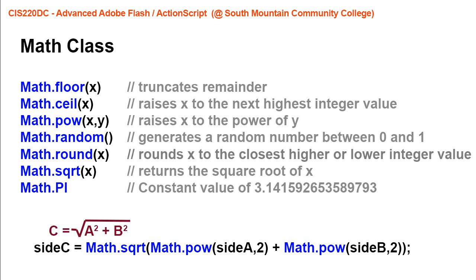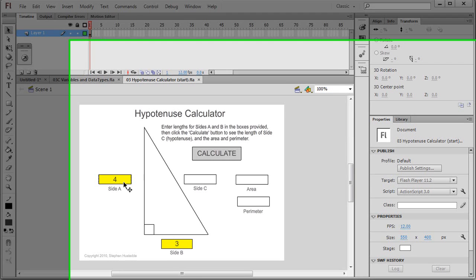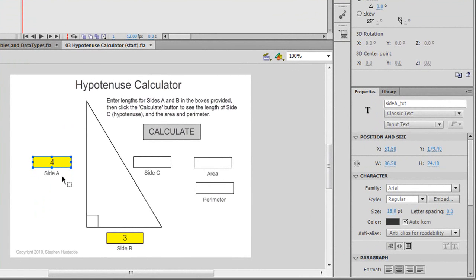Those two expressions are going to be executed and then added together, and then we take the square root of all that inside the parentheses. Here is our example — I've created an application that has a dynamic or input text box for side a and an input text box for side b. The user can enter those values.